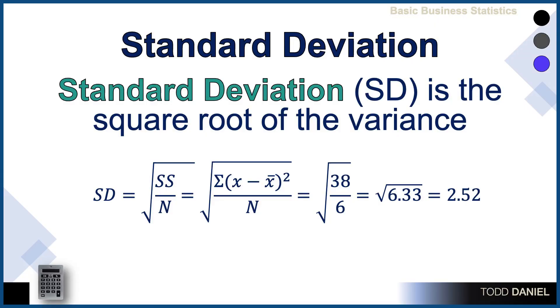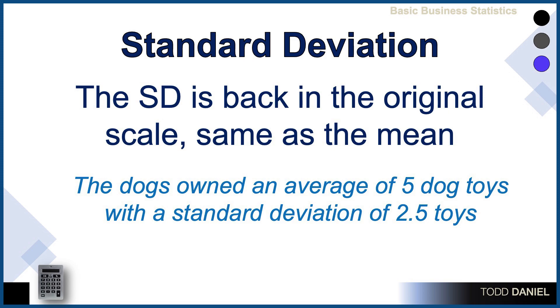It's as simple as taking the square root of the variance — and that is called the standard deviation. The standard deviation is the square root of the variance. The advantage of a standard deviation is that it is reported in the original scale, the same as the mean. So now we can say these dogs own an average of 5 dog toys with a standard deviation of 2.5 dog toys. And that is how we mathematically calculate the variability within our data set.